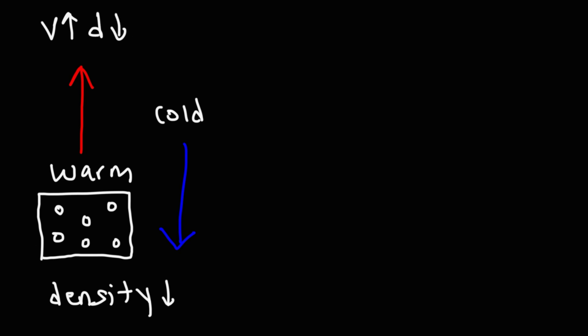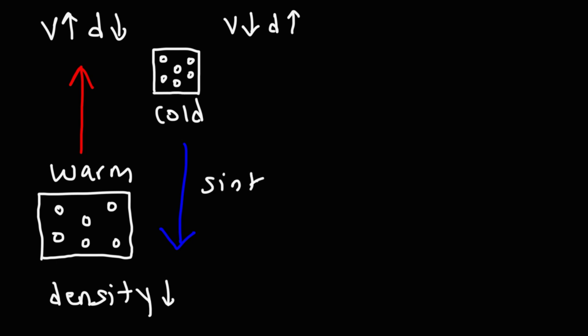But what happens if you remove heat from air molecules? If you take away thermal energy, they contract and get closer together. So even though the mass stays the same, the volume decreases, and if you decrease the volume, the density goes up. So warm air is lighter than cold air with respect to density. Cold air is denser, so cold air sinks and warm air rises.